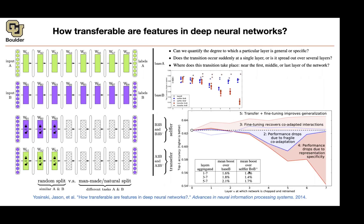The table shows how much boost you get over your baseline and over the selfer from seeing a different dataset. Entries correspond to transferring at layer one through seven, or layers three through seven, or layers five through seven. Going back to the research questions: layers toward the end of the network are more specific, while initial features are more general. This answers whether we can quantify layer generality — yes, by studying where performance drops when you cut the network.